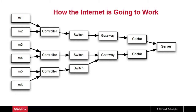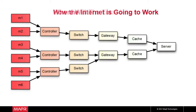The last mile problem becomes the first mile problem. We have billions of machines. Quick vote: anybody here have a phone? Anybody here have two phones? The machines win — they outnumber us even in this room.